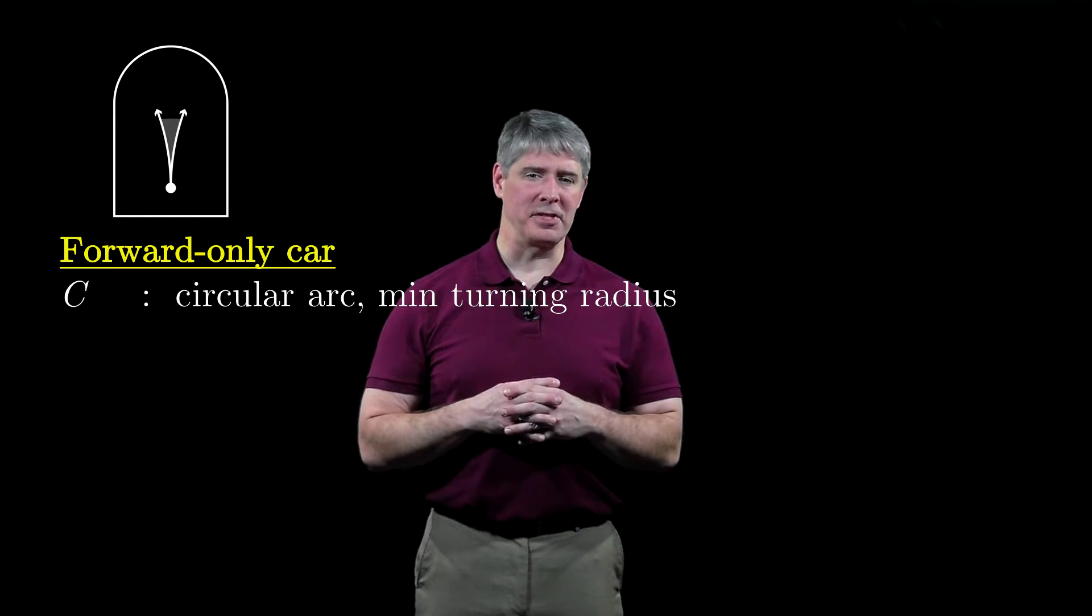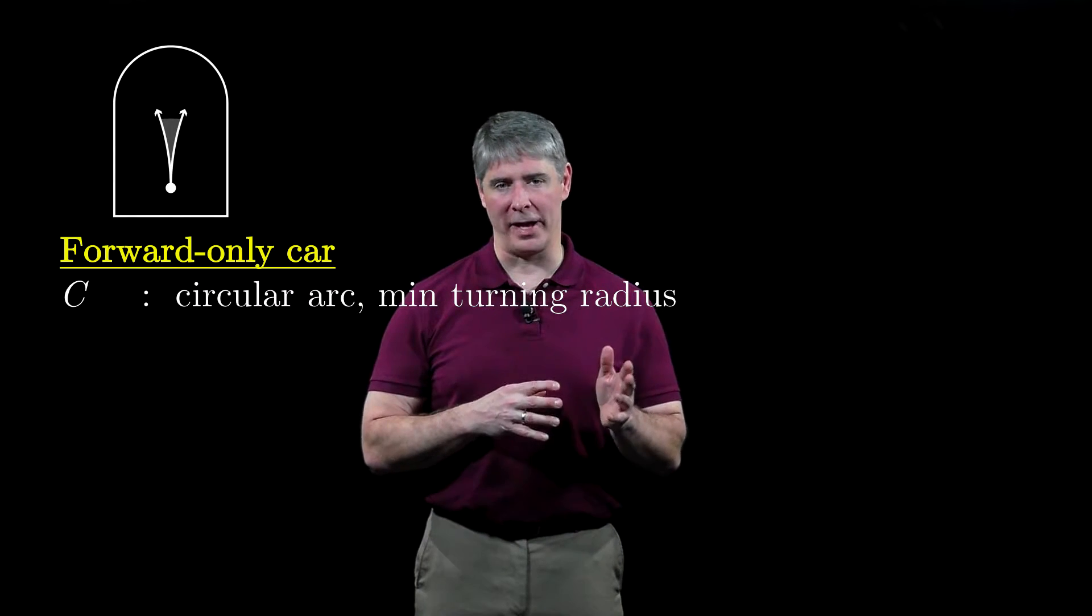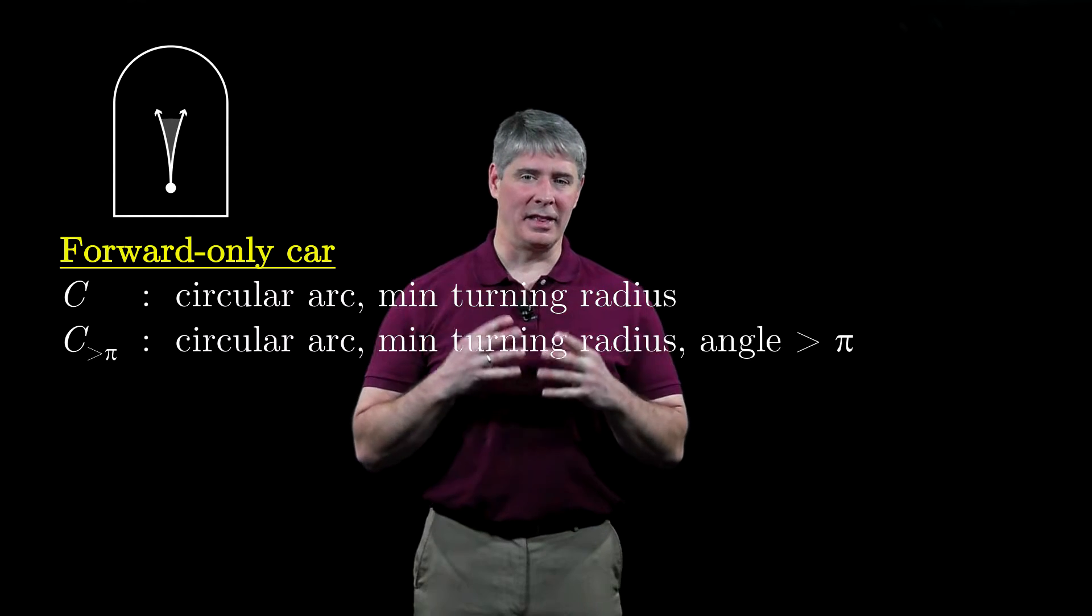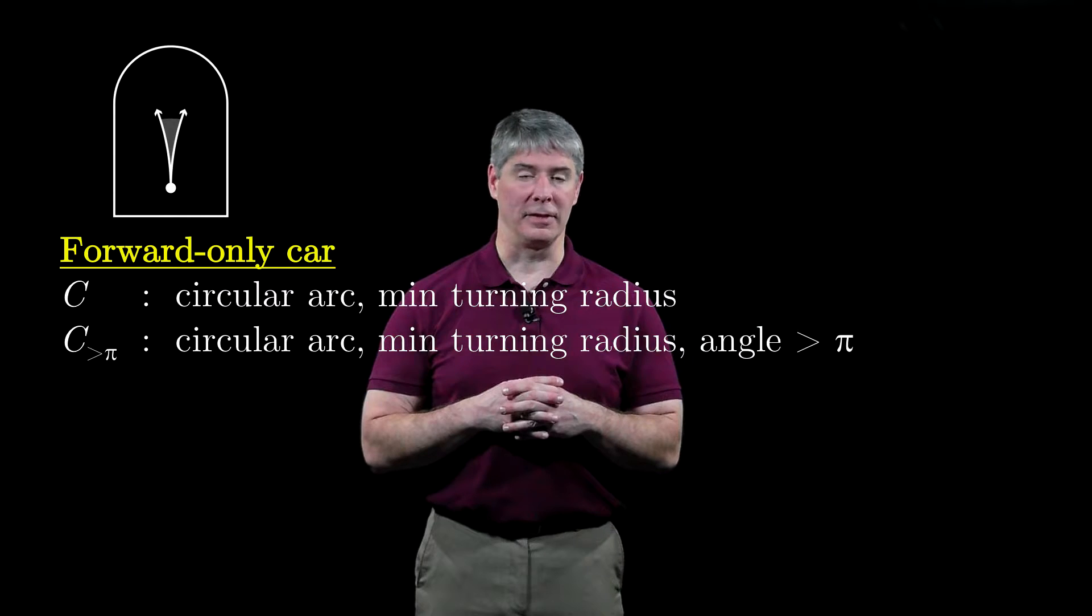Let C represent a circular arc that the car follows when it turns at its minimum turning radius, either to the right or to the left. And let C greater than pi represent such arcs that travel an angle of at least pi.